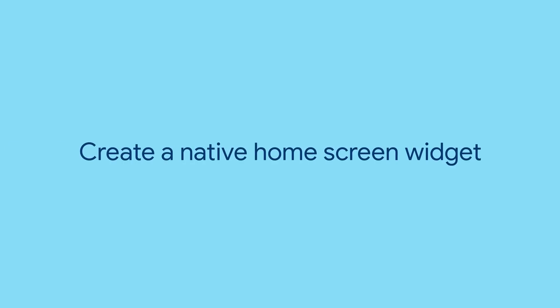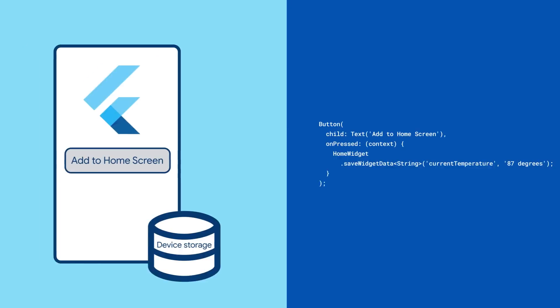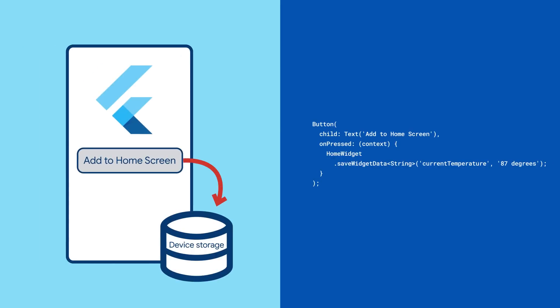Start by creating a native home screen widget on the platform side of your app. For step-by-step instructions on how to do this, check out the code lab in the video description. Once that's done, you'll update it using data from your Flutter app with the saveWidgetData method, which makes the data from on-device storage accessible to your home screen widget.